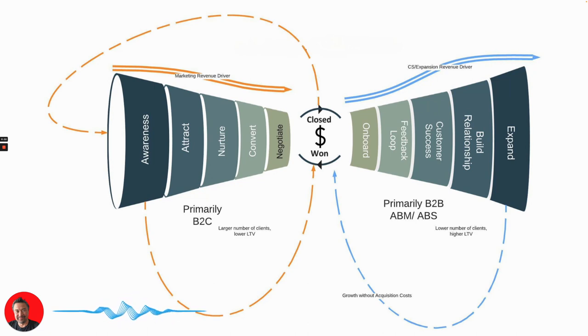So let me summarize the bowtie funnel. We know the traditional funnel which is basically the left side, and as it converts you get less people and then eventually you close win. Well the bowtie funnel goes a little bit into more detail and it covers onboarding, the CS side, and then the expansion and the relationship building side.